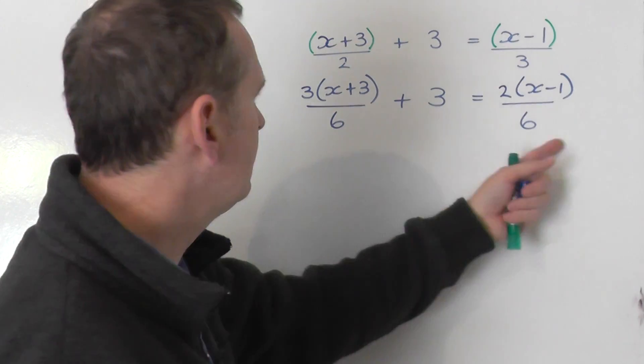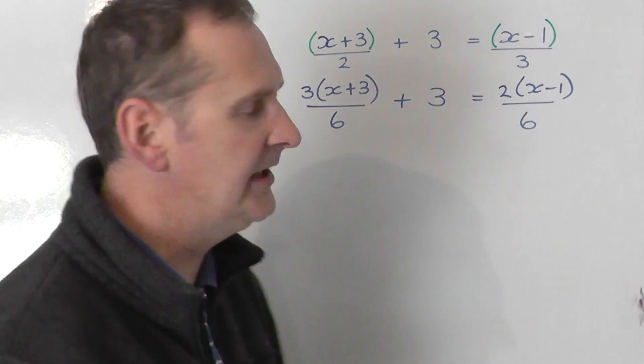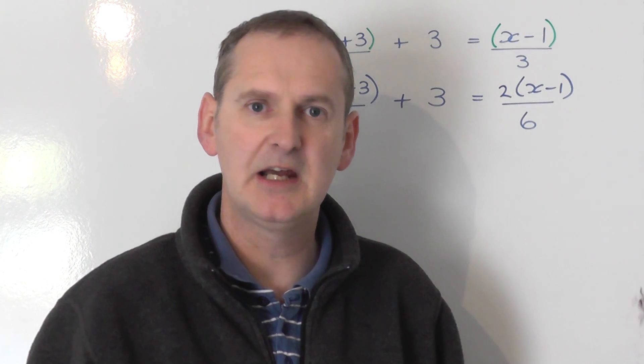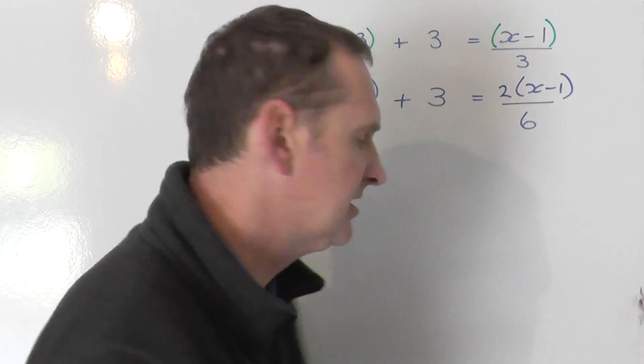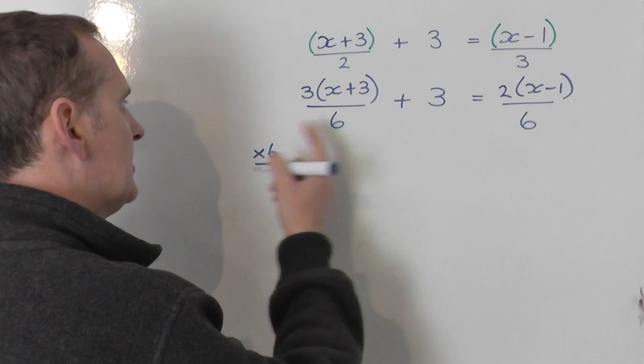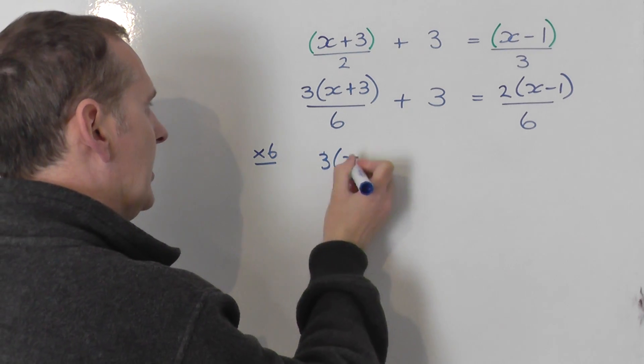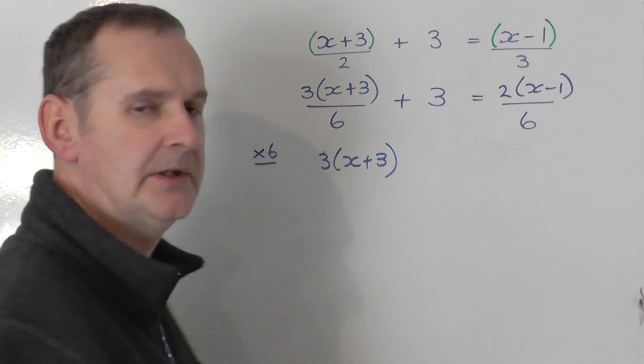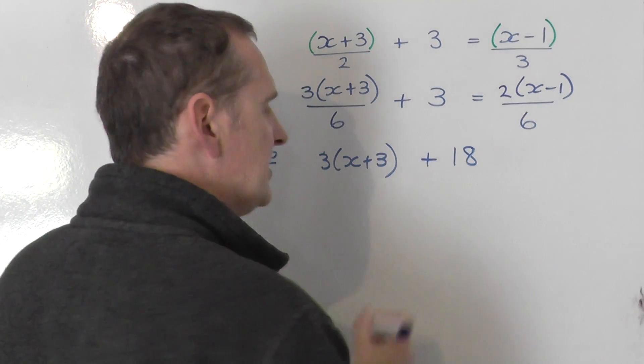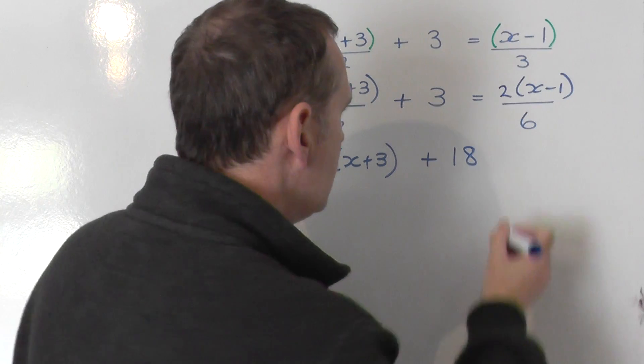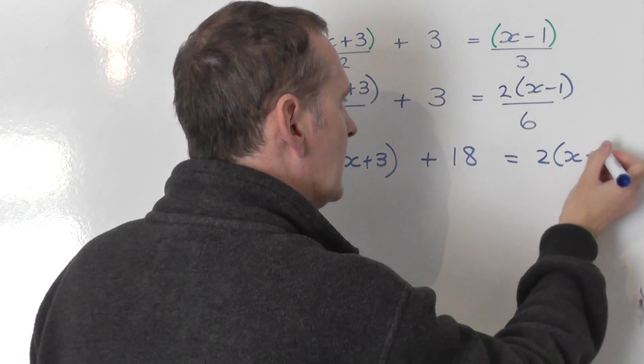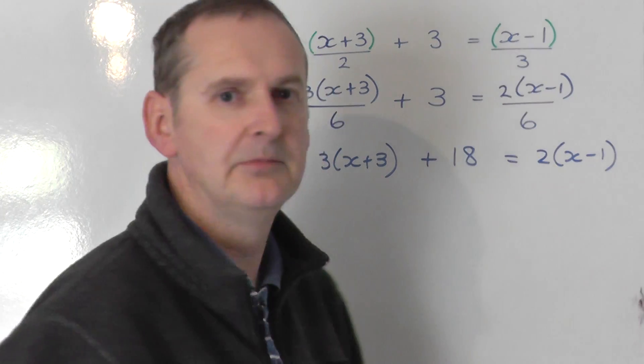So now I've got an equation with brackets and fractions in, but the fractions are both 6s. I can get rid of all those fractions now by simply multiplying everything by 6. So I'm going to times everything by 6. If I times this by 6, I just get the top line, which is 3 lots of the bracket. I've got to times that by 6, you get plus 18. Don't forget to times that by 6. Equals, I've got to times this by 6, you just get 2 lots of x minus 1. The share by 6 on the bottom disappears.